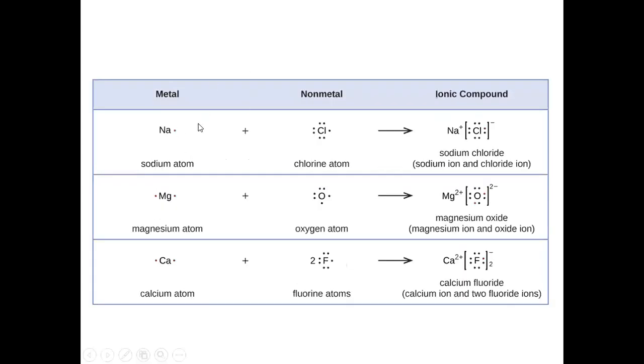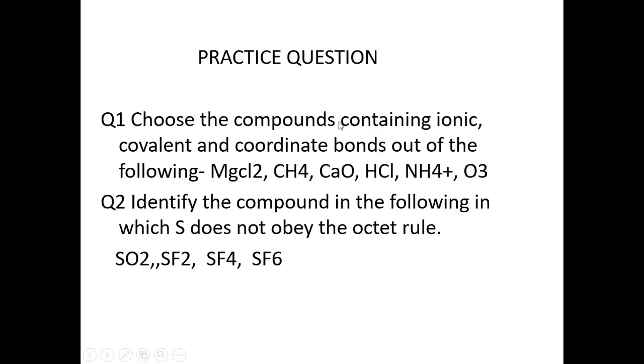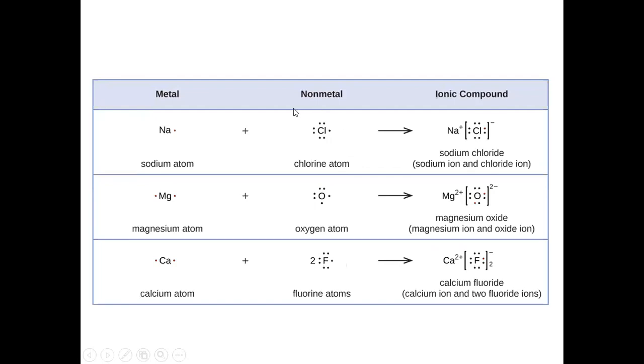For example, we have seen a representation in the ionic bond. In the outermost orbital of sodium, there is one electron. Chlorine's atomic number is 17. So in the outermost orbital, how many electrons should be? Two, eight, and seven. In the outermost orbital, how many electrons are? Seven. Two, four, six, seven.